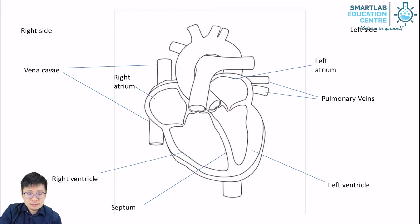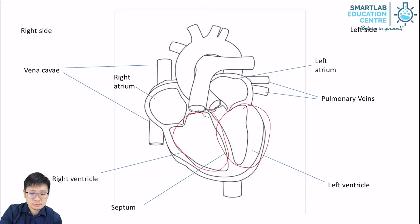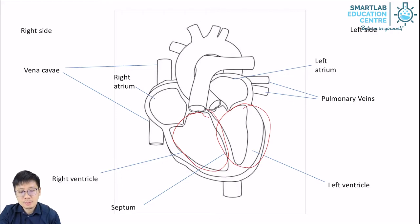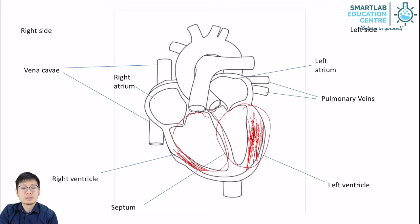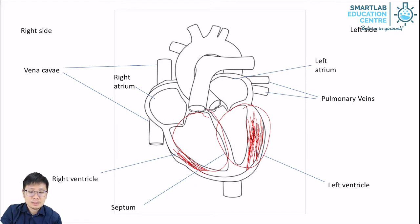On the lower side of this picture, we have the right ventricle and the left ventricle. The right ventricle receives blood from the right atrium, and the left ventricle receives blood from the left atrium. Do take note: the wall of the left ventricle and the right ventricle are different in thickness. The left ventricle is much thicker than the right ventricle because it needs to pump blood to the rest of the body.